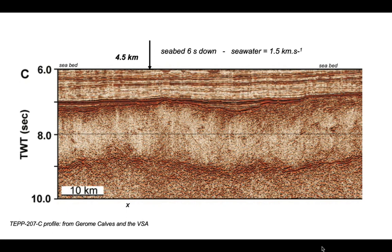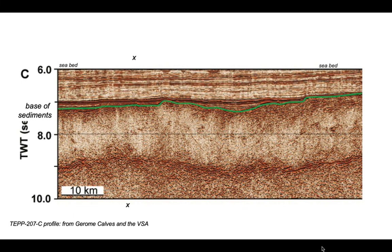Now let's turn our attention to the sediment thickness and pick the top of the sediment by picking the base of that well-layered reflectivity seen in the upper part of the profile. The material underneath that green pick is oceanic crust, which we'll come to in a minute. Looking at the thickness of the sediments — that interval is the difference between six seconds and about 7.2 seconds, giving an interval thickness of 1.2 seconds two-way time.